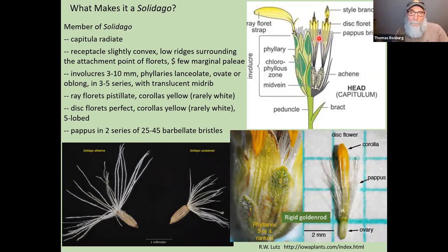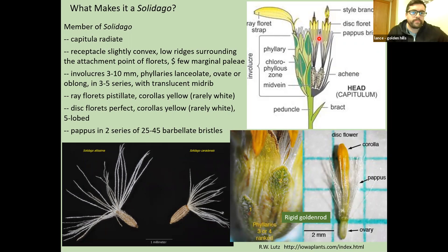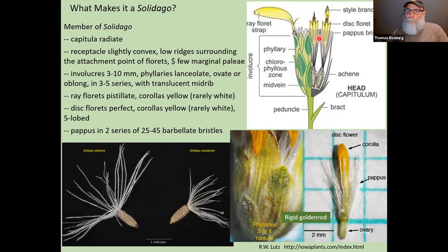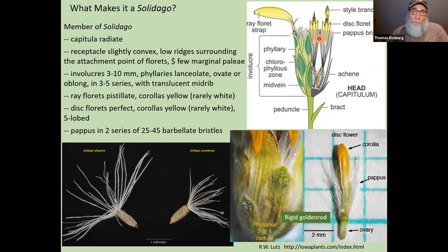A question about hybridization: hybrids do occur in Solidago, but not nearly as commonly as in Symphyotrichum. One hybrid I've come across is between Solidago canadensis and Solidago uliginosa, the bog goldenrod, but by and large hybrids are not nearly as common in goldenrods as in asters.